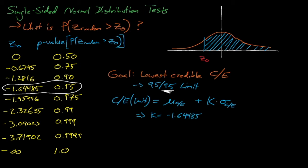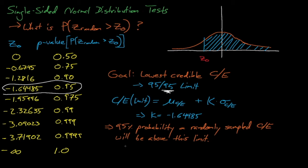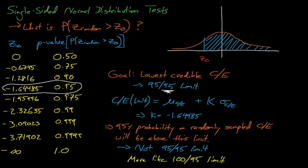As you can see, kappa equals negative 1.64485 here. Through this equation, we arrive at a limit for c over e where there is a 95% probability that another c over e drawn randomly from this distribution will be greater. However, this limit is not actually a 95-95 limit, since a 95-95 limit requires 95% confidence that there's a 95% probability that another randomly sampled point will be larger than our limit. The limit here is actually more like a 1-95 limit, since we assume with 100% confidence that our data points follow a normal distribution with a known mean and standard deviation.